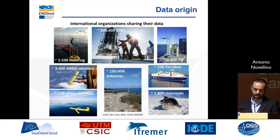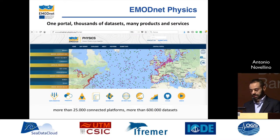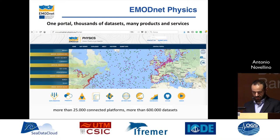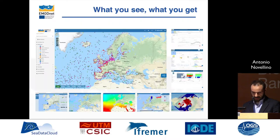We have more than 2,500 moorings, more than 500,000 CTDs, more than 2,000 tide gauges, and so on. We have one portal, run by Digimare, to make available thousands of datasets and many products and services. At the moment, we have more than 25,000 connected platforms providing more than 600,000 datasets.